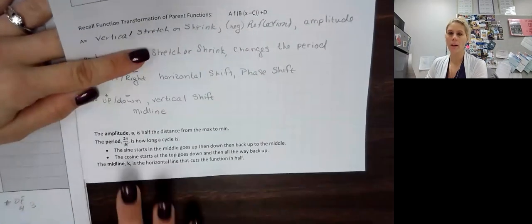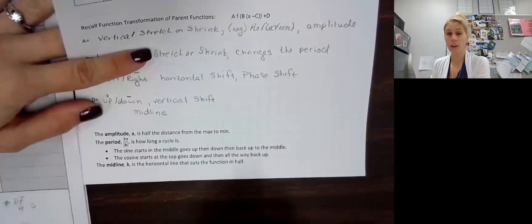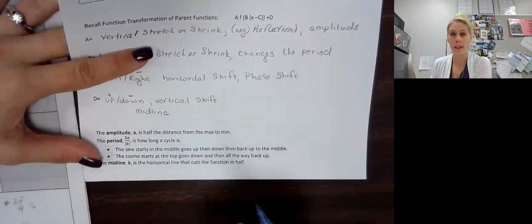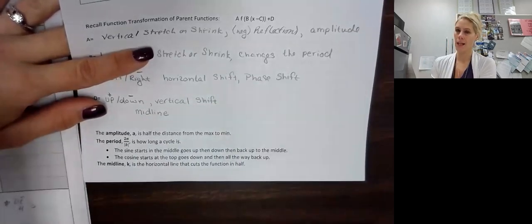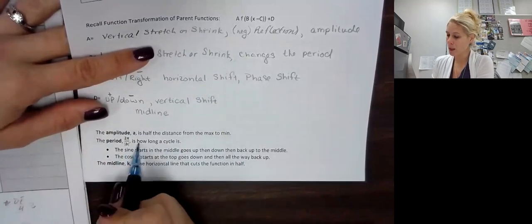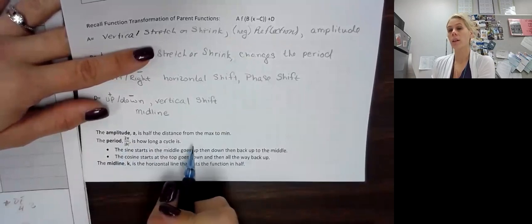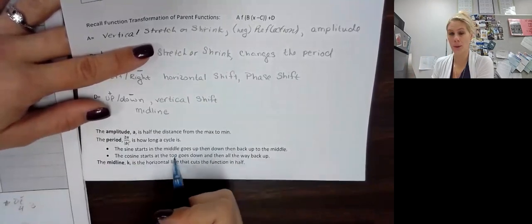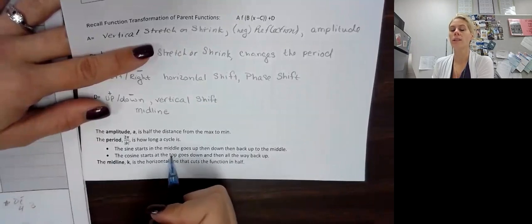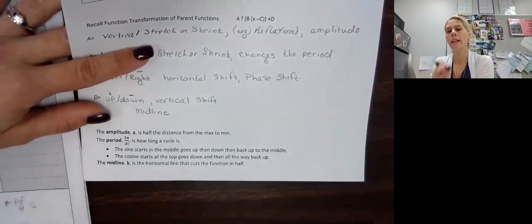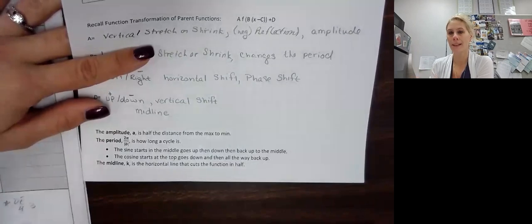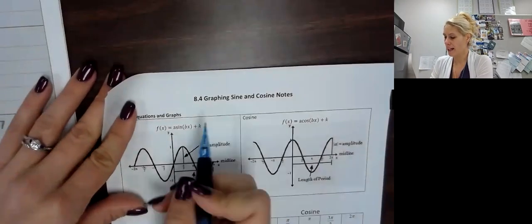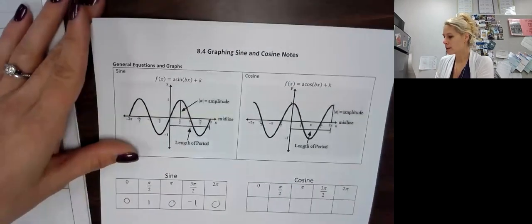Here's the vocabulary for the trig functions. Amplitude is half the distance from the max to the min. To find our period, we take 2 pi and divide by B — that's how long the cycle is, how long it takes for that wave to repeat. Sine starts at the middle and cosine starts at the top. The midline is the horizontal line that cuts the function in half — that's K, like our D.